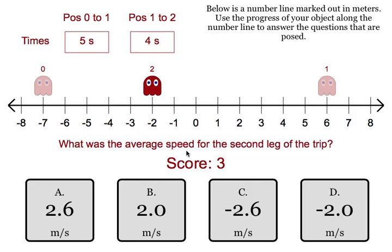They then want the average speed for the second leg of the trip. The second leg of the trip is when you go from the turning point to the ending point, which is right here. So he went a total of 8 meters. With speed, direction is not important. So he went 8 meters in 4 seconds. That's 2 meters per second. Don't pick the one with the negative, because again we're looking at speed.